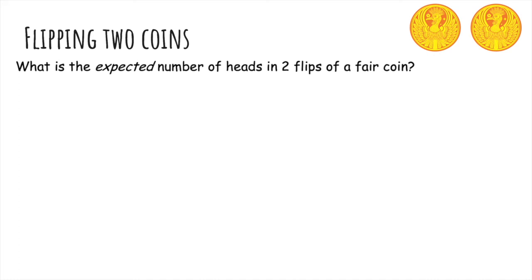Now let's talk about the expected number of heads in two flips of a fair coin. Well, I think it's just one, but how do we show this mathematically? Since X is the number of heads in two flips of a fair coin, let's first denote this as the expected value of X, E of X.